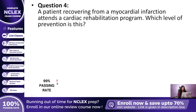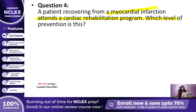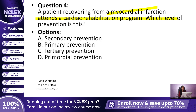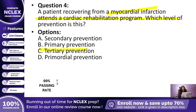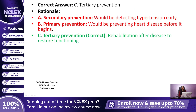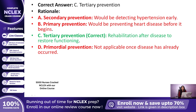Question 4: A patient recovering from a myocardial infarction attends a cardiac rehabilitation program. Which level of prevention is this? The correct answer is C — Tertiary prevention. The patient already has heart disease, and the focus now is on rehabilitation, restoring health, and preventing further complications.